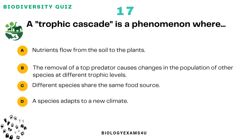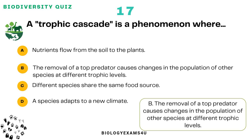Question number 17: A trophic cascade is a phenomenon where? Option A: Nutrients flow from the soil to the plants. Option B: The removal of a top predator causes changes in the population of other species at different trophic levels. Option C: Different species share the same food resource. Option D: A species adapts to a new climate. The correct answer is: the removal of a top predator causes changes in the population of other species at different trophic levels.